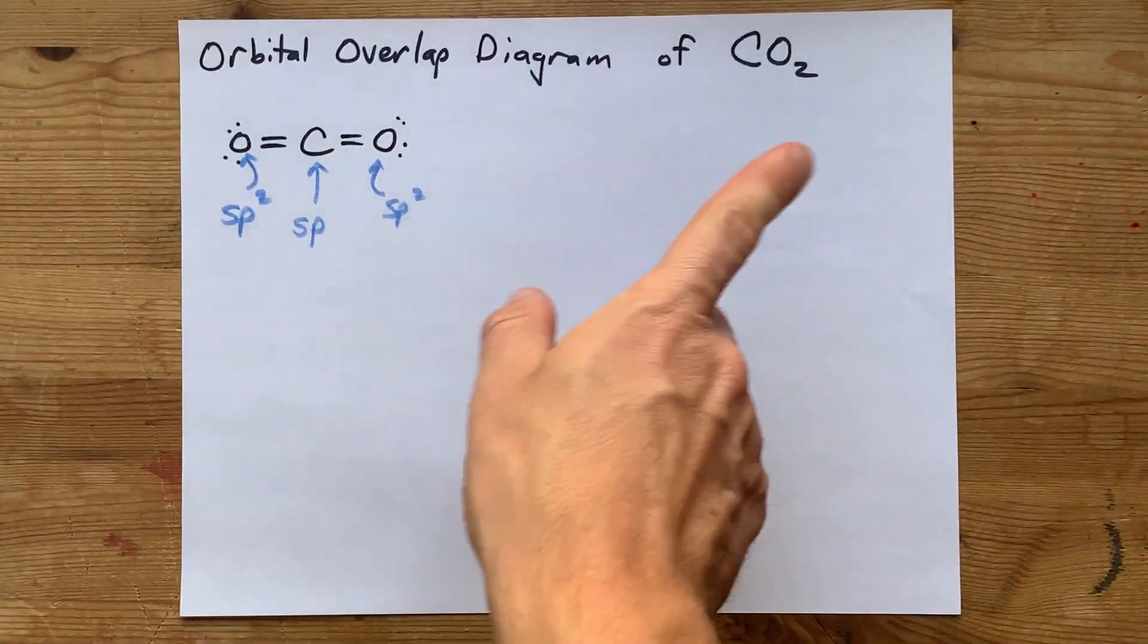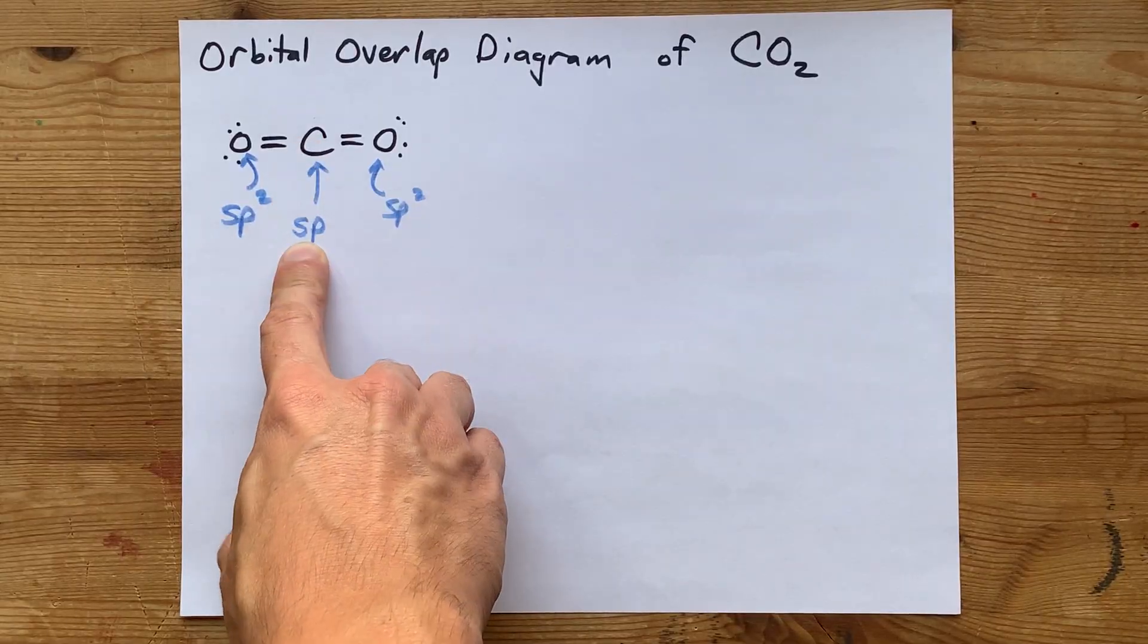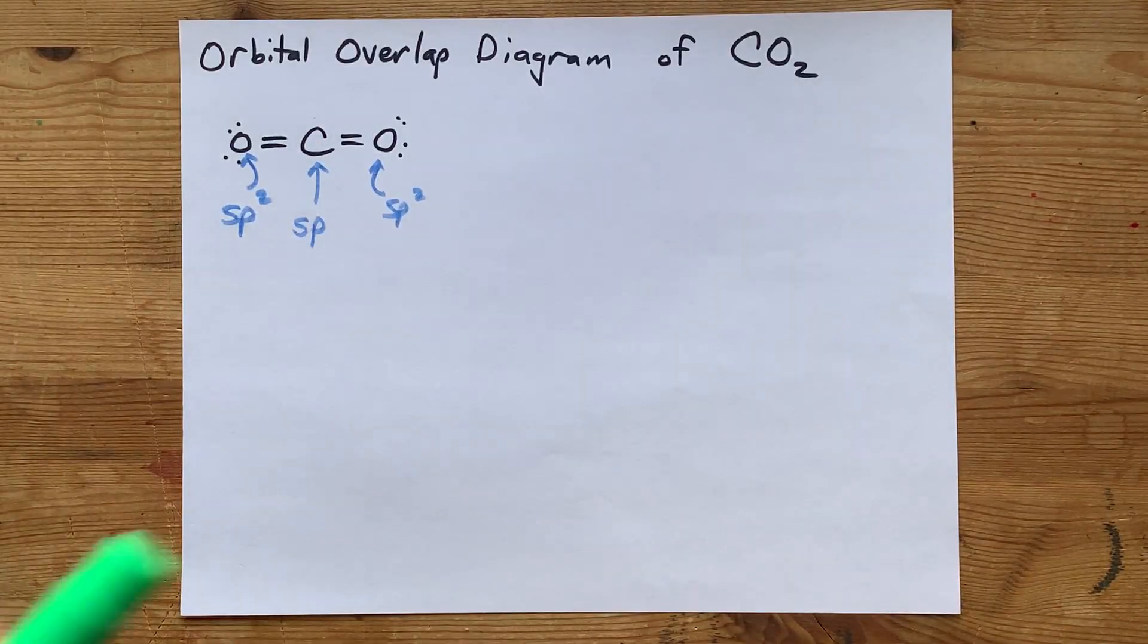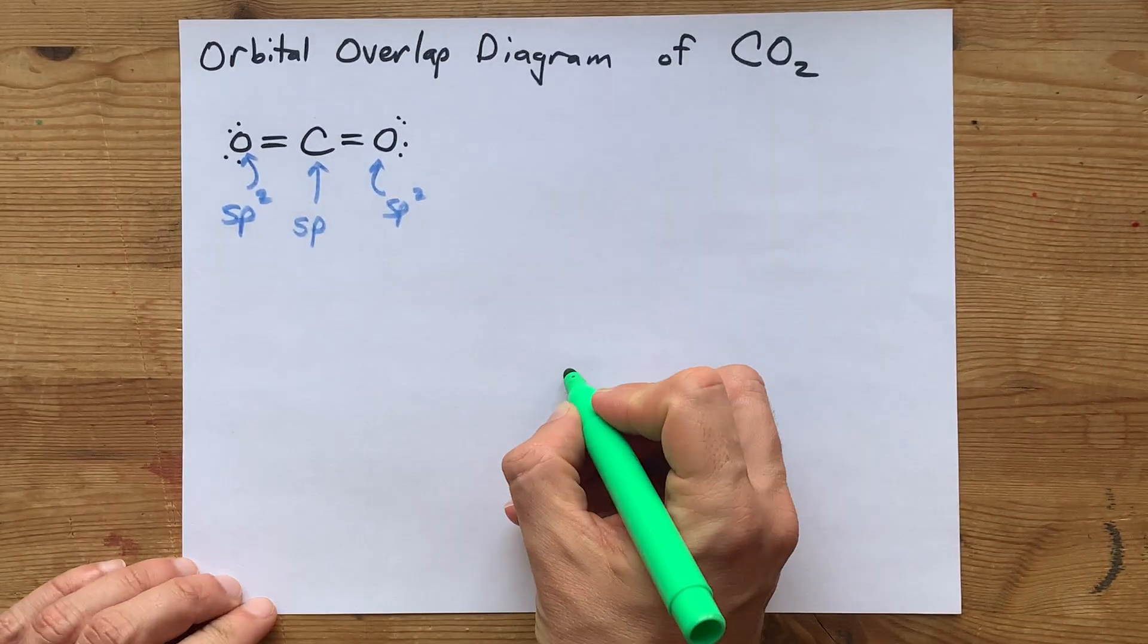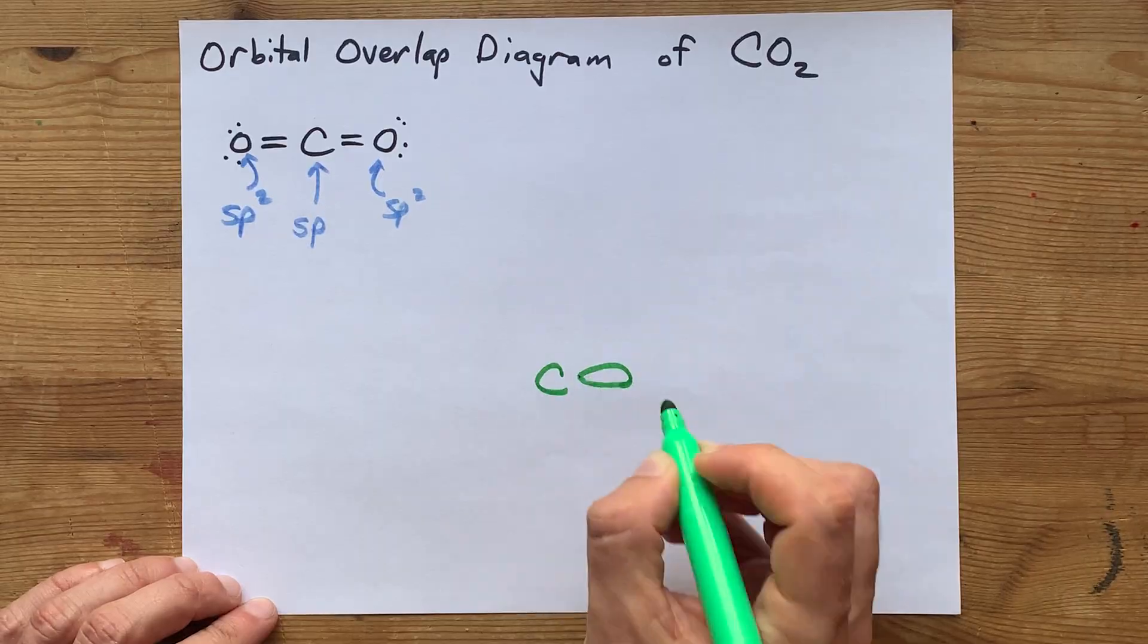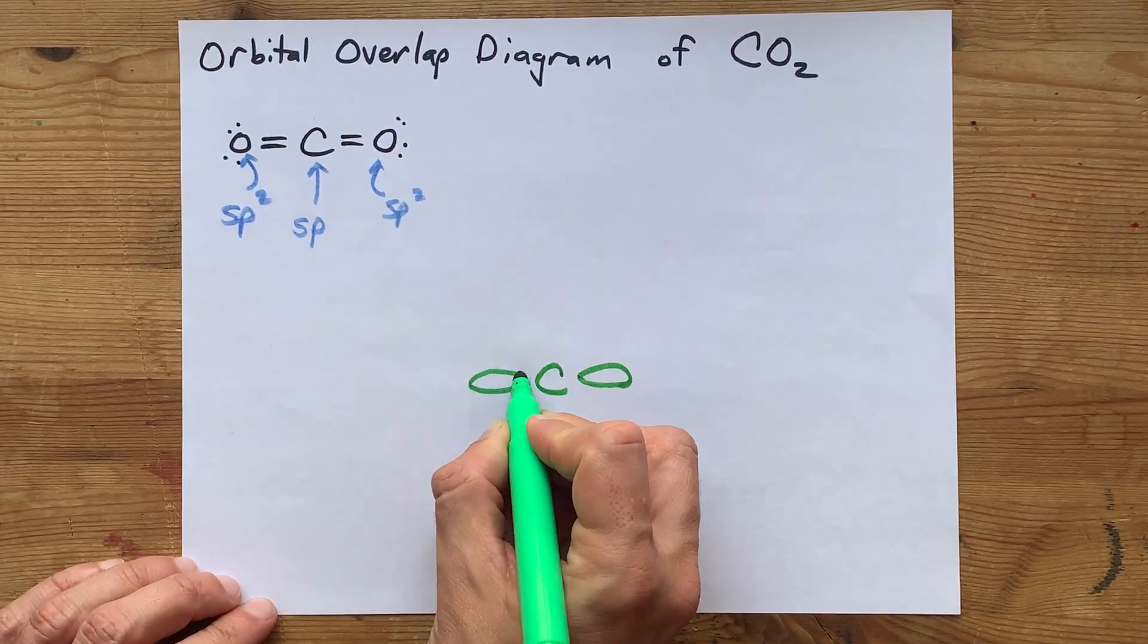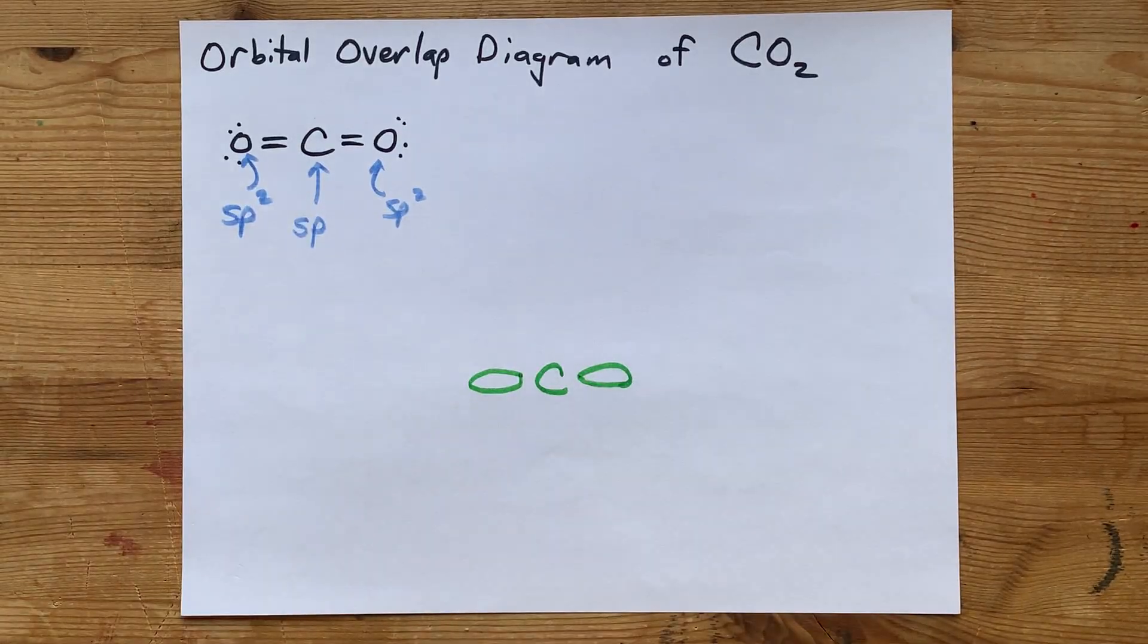Now the tricky part about this orbital overlap diagram is that there are two leftover p-orbitals for carbon. Let's start by drawing the sp-hybridized orbitals. I'm going to put carbon in the center. Sp-hybridized orbitals are linearly arranged around the carbon. There you go. One, two, sp-hybridized orbitals.